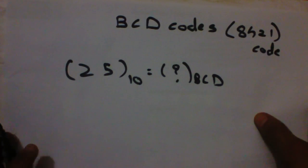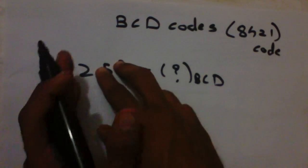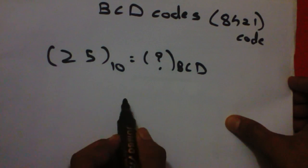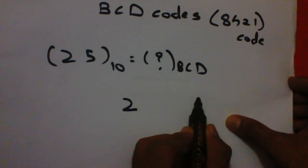To calculate BCD number, we will treat 25 as separate numbers 2 and 5. We will treat 2 and 5 as separate numbers.